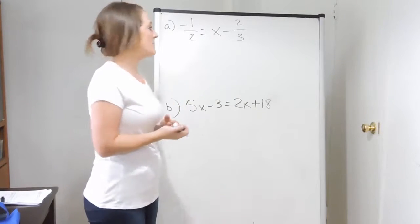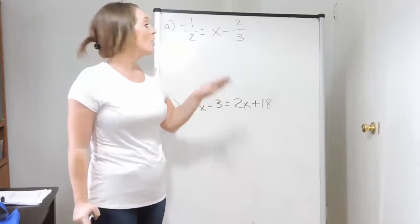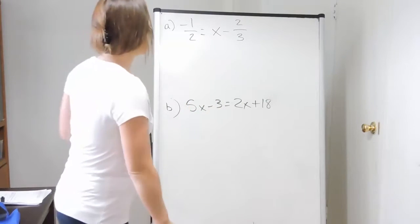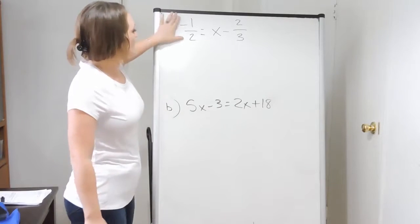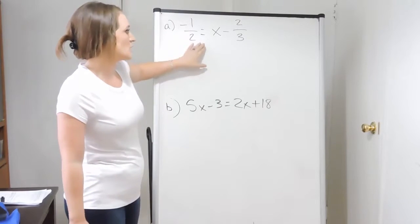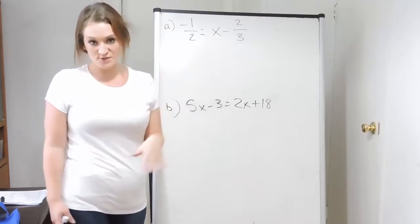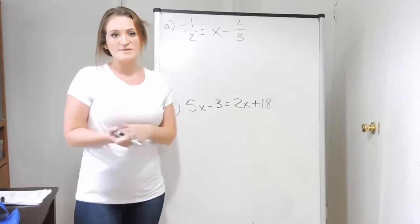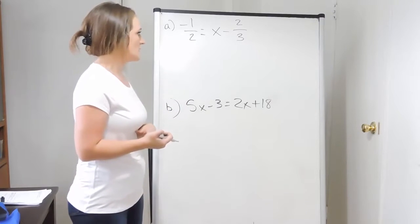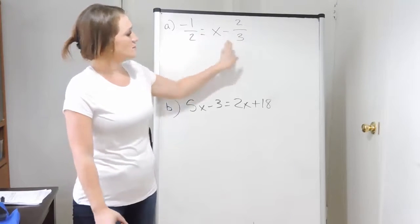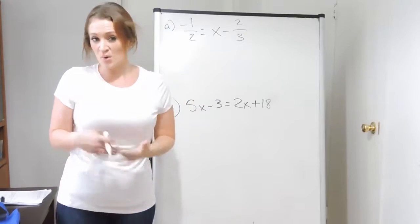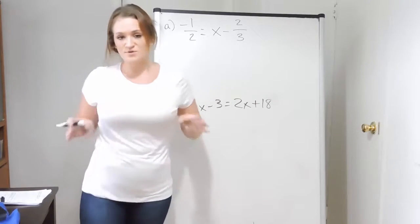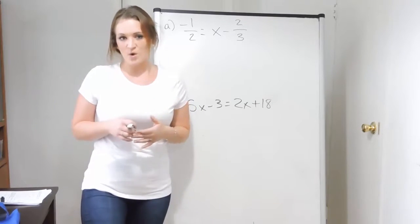Let's try dealing with some equations that might involve more than one step, or maybe involve some fractions or something like that. So let's start with our fraction problem over here. Here we have negative one half is equal to x minus two thirds. This is one of the problems where you do have a few choices on how to solve this equation. Considering that I really only have two fractions here, you could go ahead and add and subtract the fractions as they are and solve them just the way that we've been talking about solving equations.